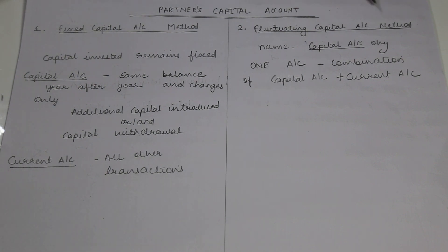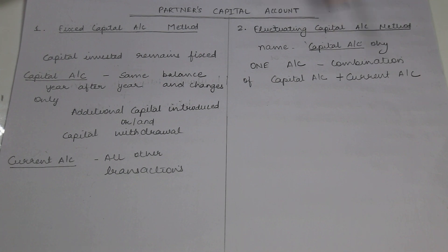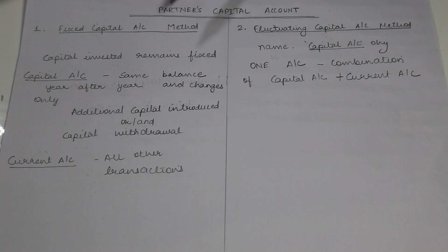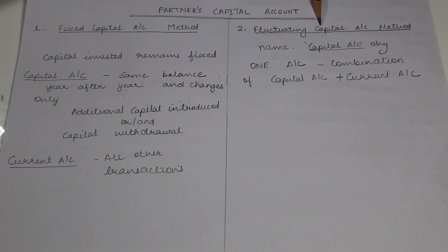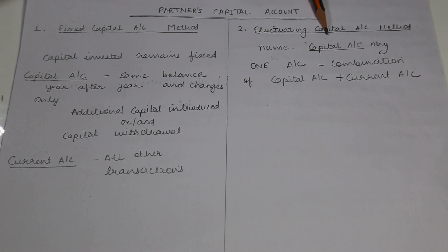Now coming to the Fluctuating Capital Account Method. In this method, both accounts are combined and a single account is maintained, which we call the Capital Account. This is the usual method we have been learning normally. If a question does not specify which capital account method to use, we will always follow the Fluctuating Capital Account Method. Now we will do a sum where we solve it using Fixed Capital Account Method and then using Fluctuating Capital Account Method, so the difference between the two will be very clearly visible.